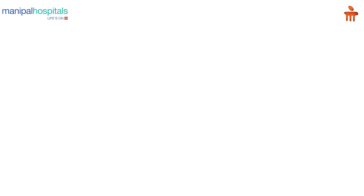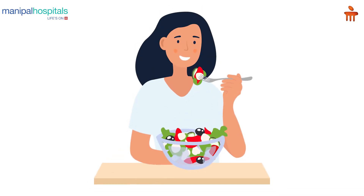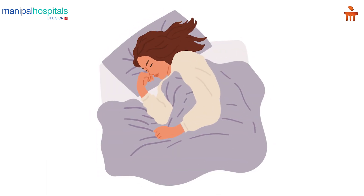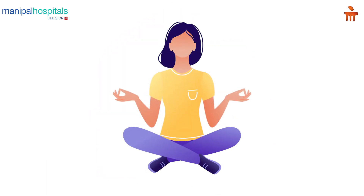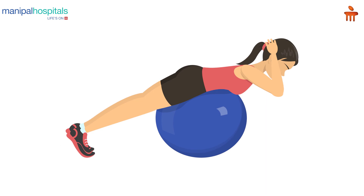If you are on the overweight side, losing weight is a very good method of improving egg quality. Apart from this, good food habits, eating at home, sleeping early and waking up early, decreased stress, and daily exercise can improve your egg quality. There are also certain antioxidants which can be given to improve egg quality.